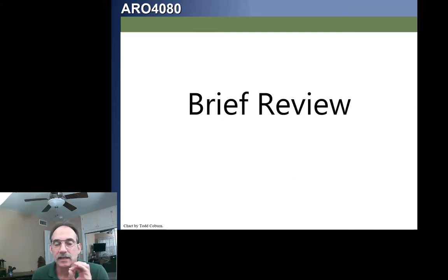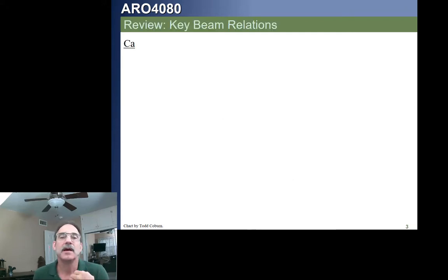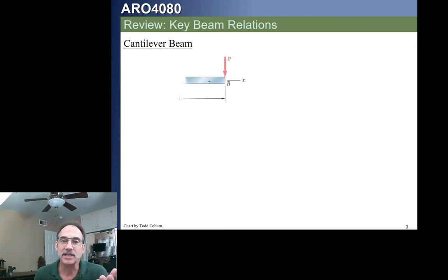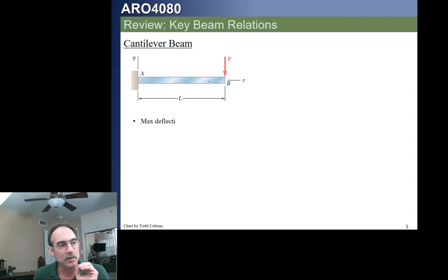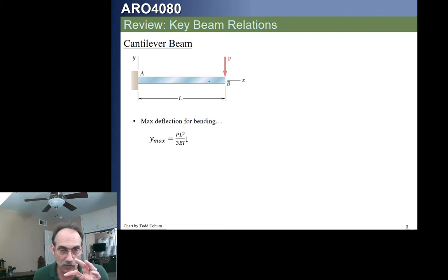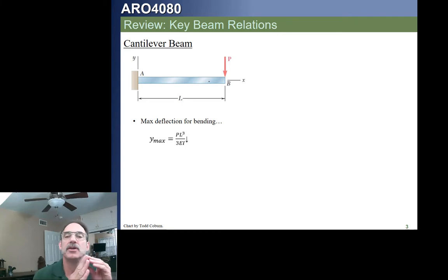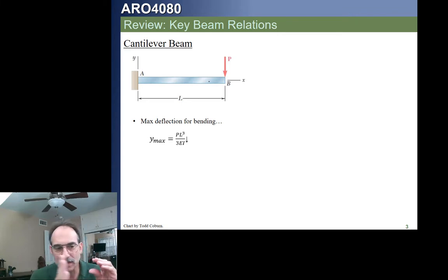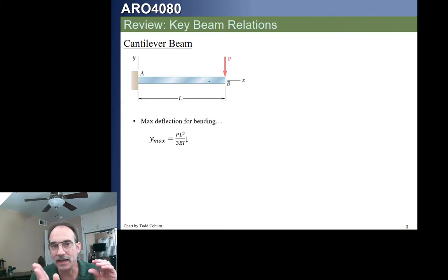Before we get started, let's take a quick review of what we saw last time about beams and deflection of beams. We saw a cantilever beam and the max deflection is given by PL cubed over 3EI. What we're really talking about is the deflection due to the normal stresses that build up in the beam — the deflection due to the transverse loads, due to bending.